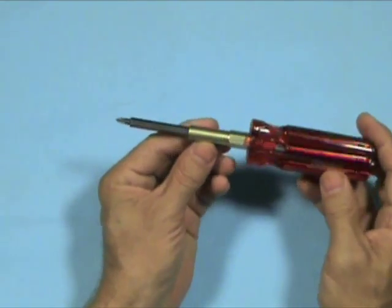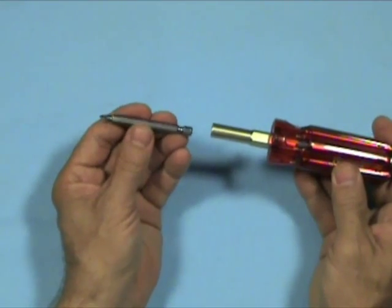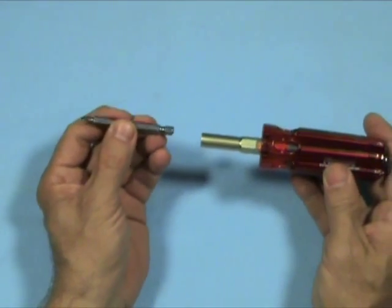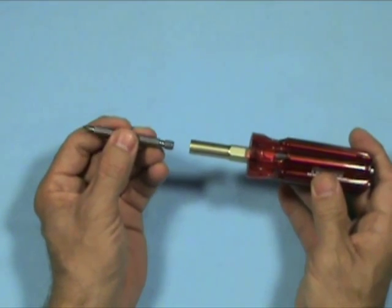Each bit is 3 inches long, held into the shaft by a very strong magnet. The quarter inch bits are also power bit rated. They can be used in power drivers as well.